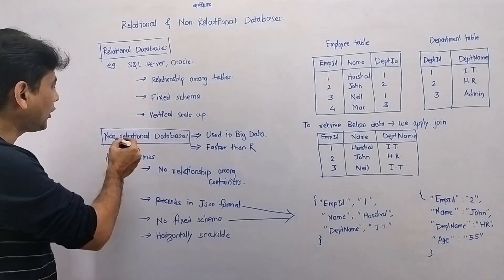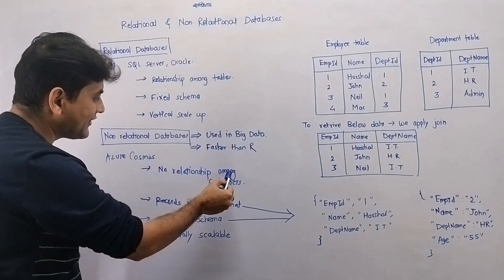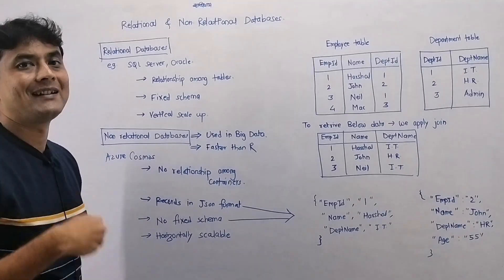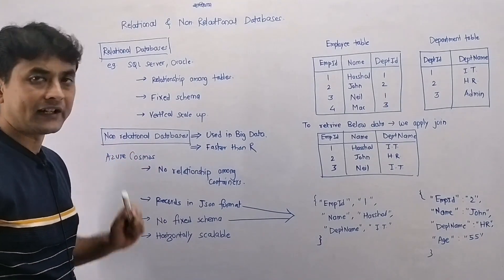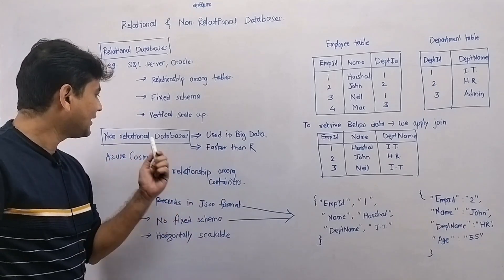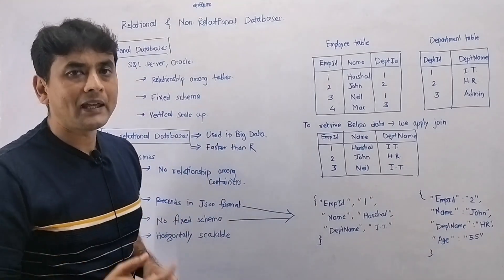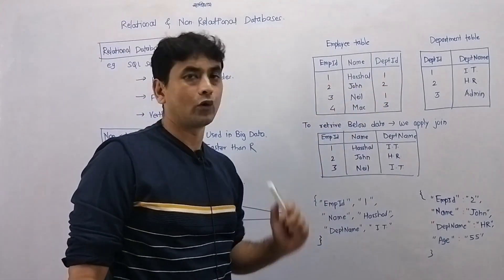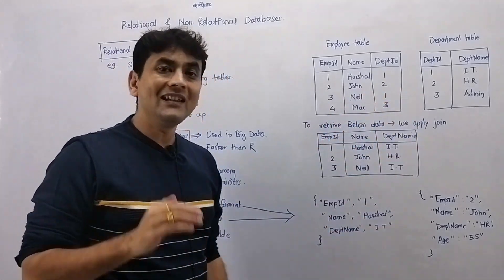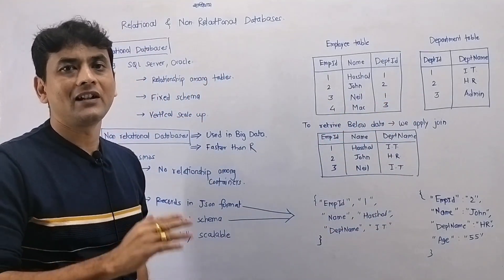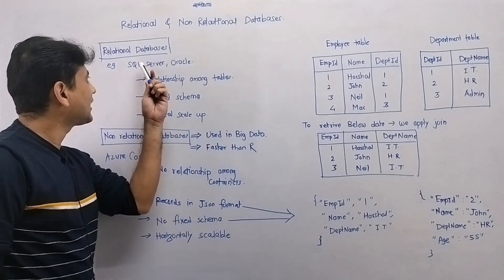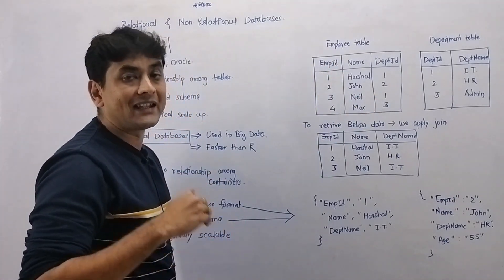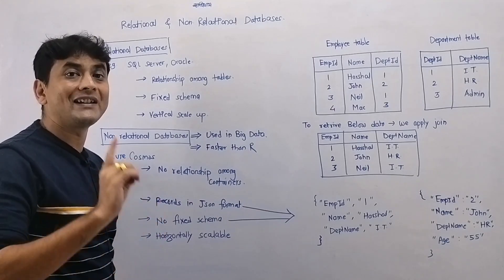On the other hand, in non-relational databases there is no relationship among the containers. Employee or department — these are called tables in relational databases, but they are called containers in non-relational databases. Since there is no relationship among containers, you may ask how this type of data is stored. In non-relational databases, this type of data is stored in the same container.